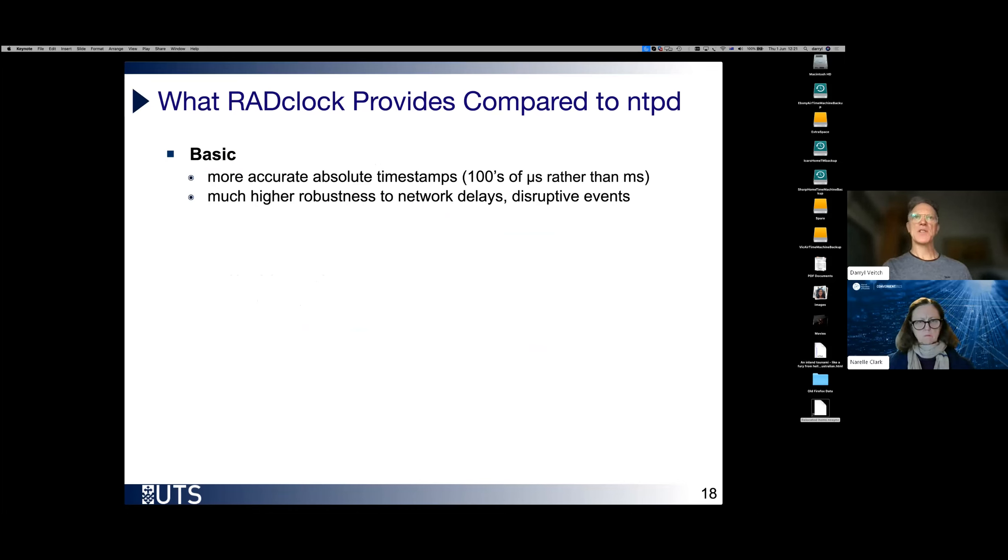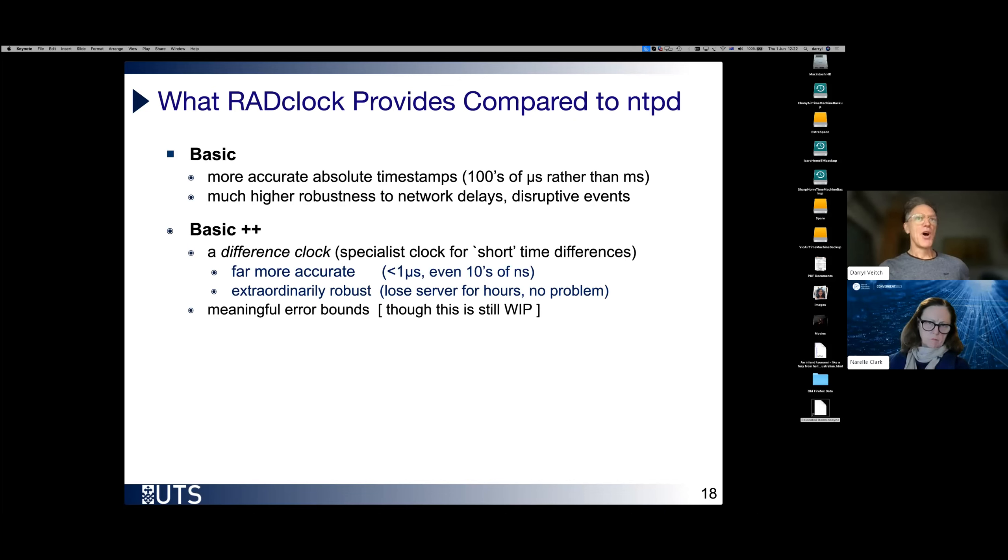So what do we get out of this RADclock approach? The fundamental thing is, of course, more accurate absolute timestamps. And here's just an indicative idea of how much better they could be. It could be hundreds of microseconds only rather than milliseconds or many milliseconds. More importantly, offers much higher robustness to network delays. It's much more bulletproof.